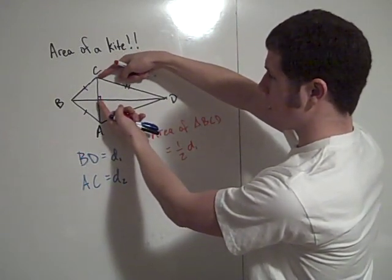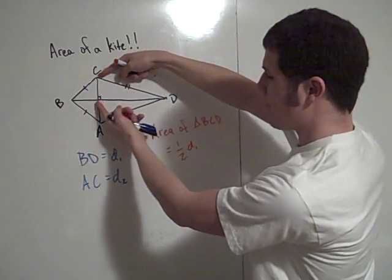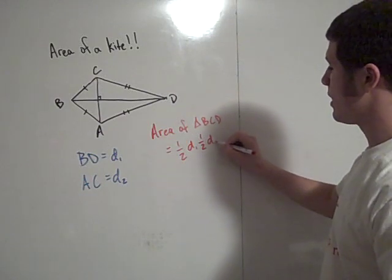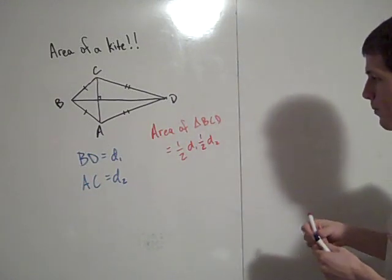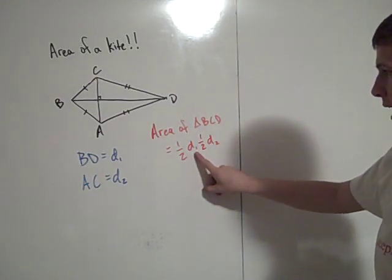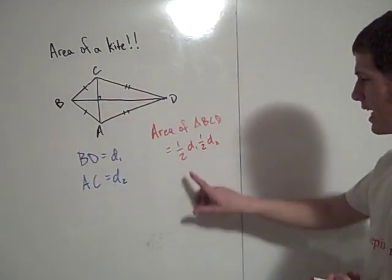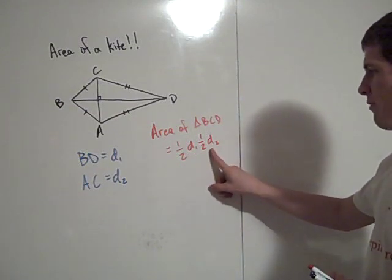And the height is the length of this altitude here. Now how long is that segment? Well that's one half of AC, so it's one half of D2. And so D1 is the base and one half D2 is the height. So the area of this triangle, triangle BCD, is one half D1 times one half D2.